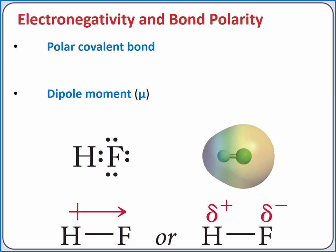We said previously that in a covalent bond, electrons are shared between two atoms. In a polar covalent bond, electrons are shared unequally, so that the electrons spend more time near one atom than the other.